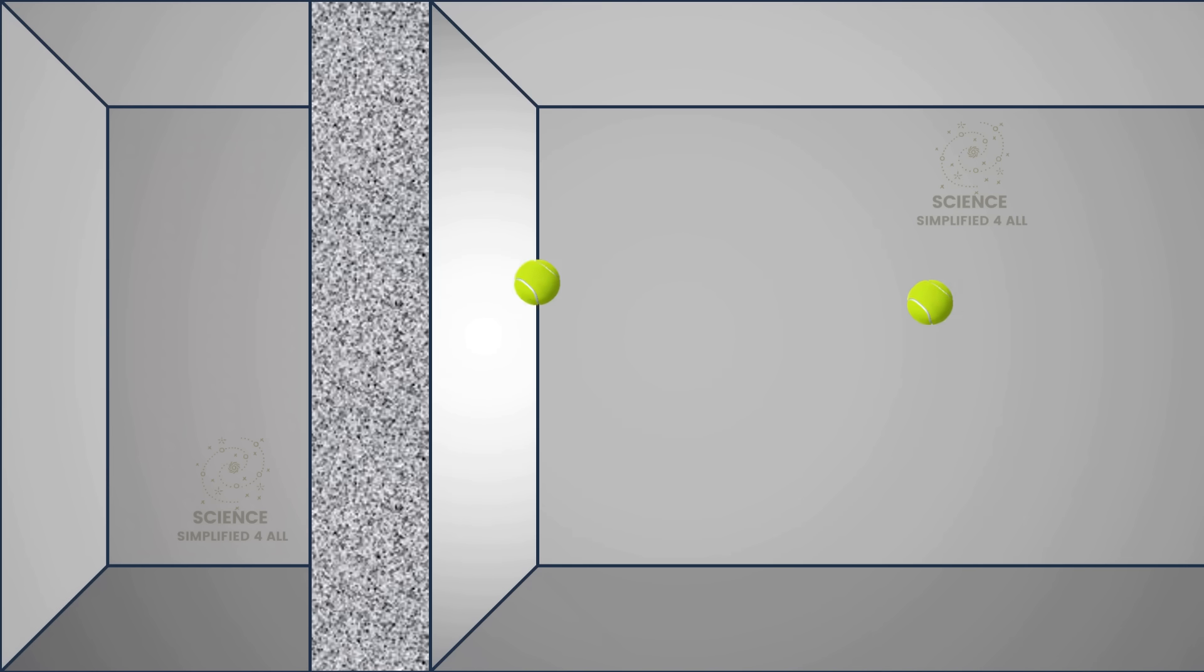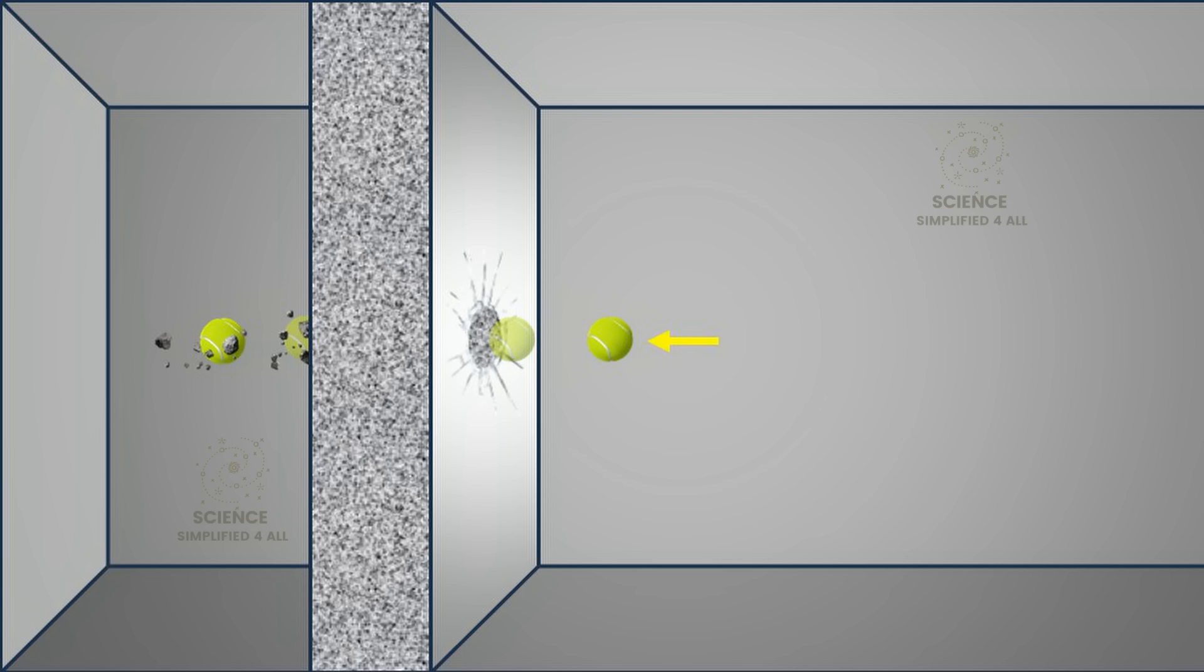The tennis ball and wall analogy is one of the most common ways people try to explain quantum tunneling. But it actually has some serious flaws. It can easily create a wrong picture of what tunneling really is. A solid wall is an impossible barrier. No matter how much energy the tennis ball has, it can never pass through it unless it breaks the wall. But that is not how quantum tunneling works.